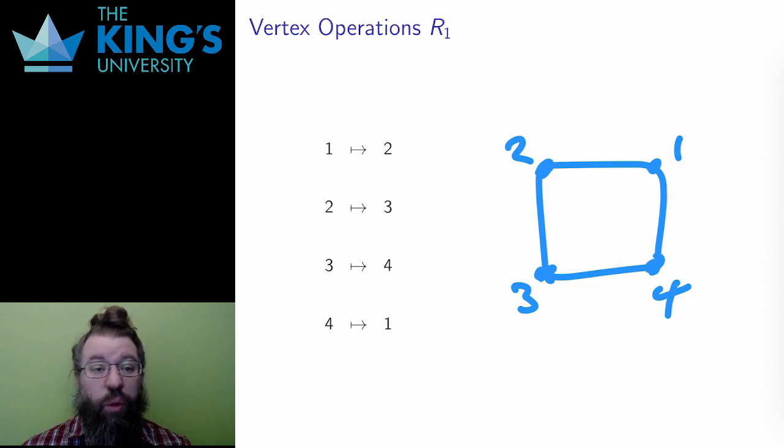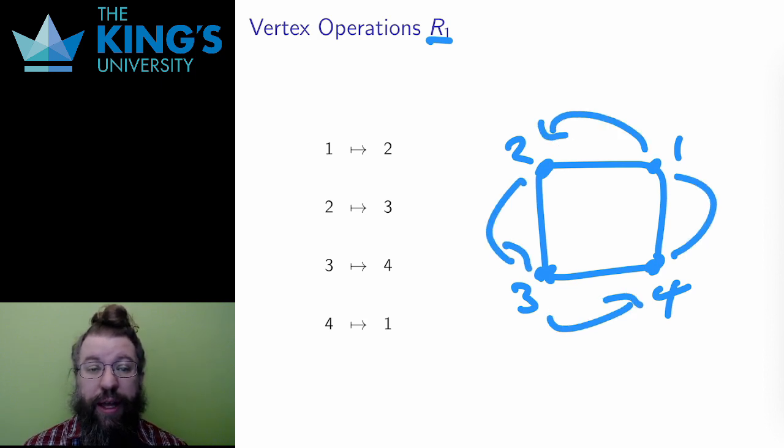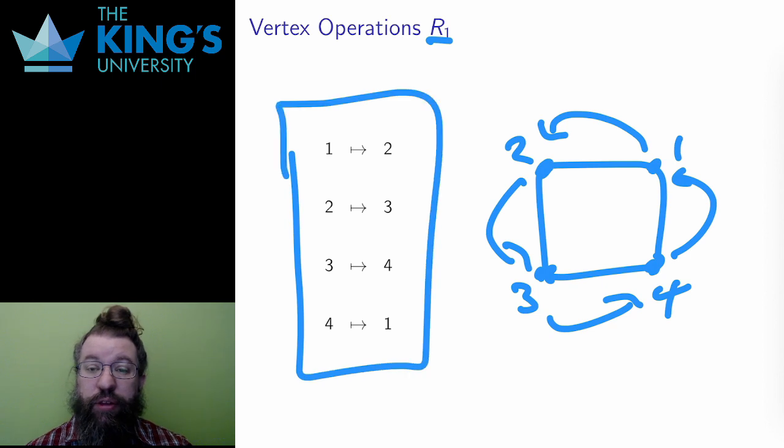The rotation R1 is rotation by a quarter turn counterclockwise. What does this do to the vertices? Well, it sends 1 to 2, 2 to 3, 3 to 4, and 4 to 1. This is enough to entirely determine this rotation. I'll call this a vertex operation, determining where the vertices go under the transformation.